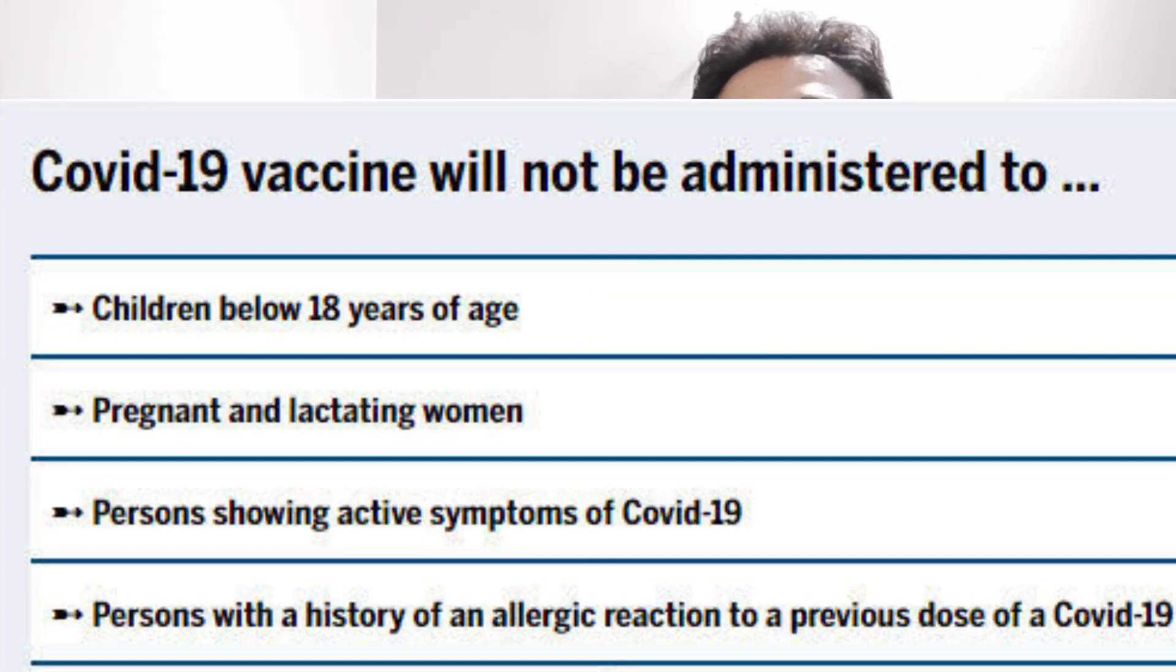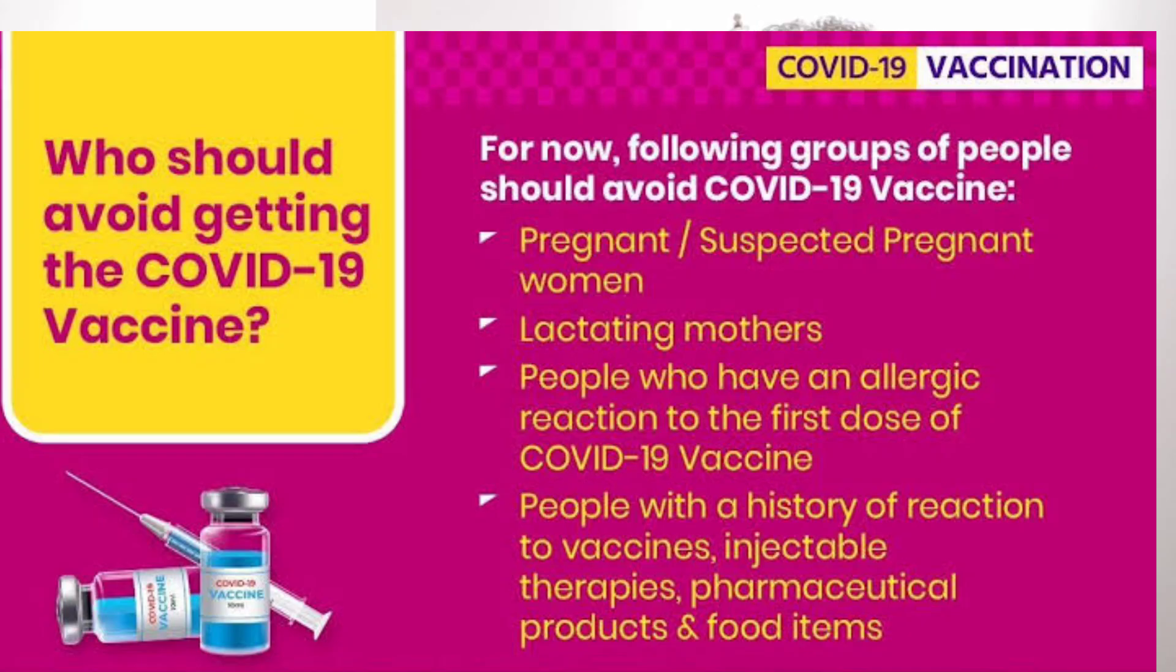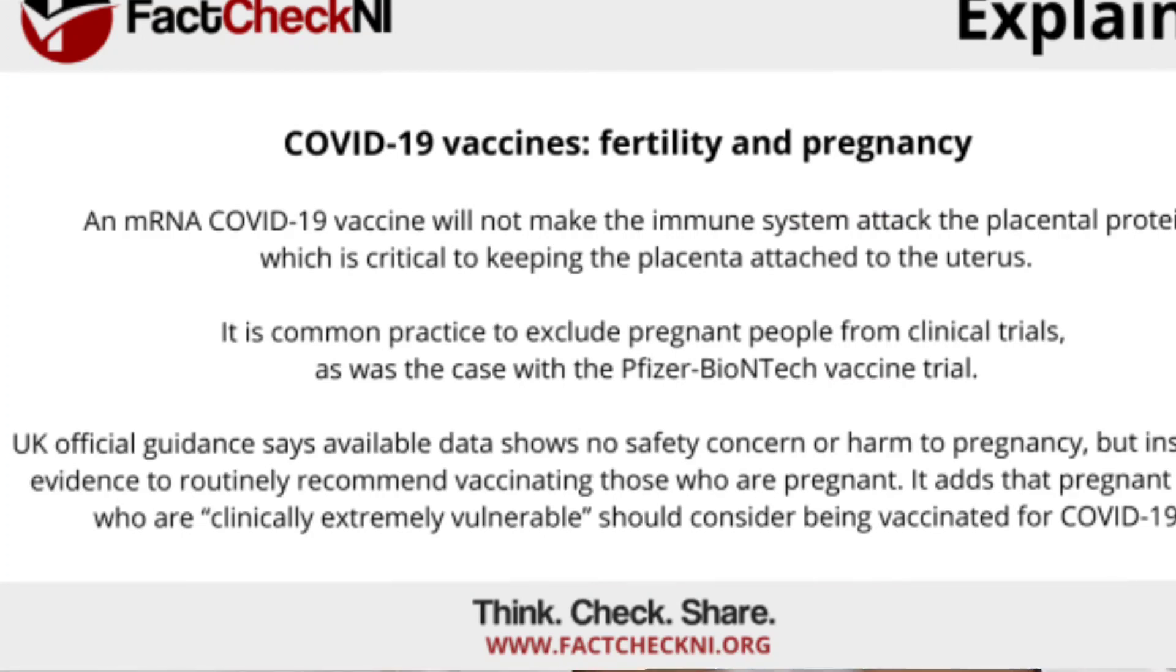Now, if so, then every pregnant woman should receive the vaccine. But then it is not advised by the government of India. Why is it so? Now, please understand that whenever a new vaccine is developed, the trials go on in healthy individuals. So the category of kids who are less than 18 years and pregnant and lactating women are excluded from this. And only healthy individuals have undergone the trial.